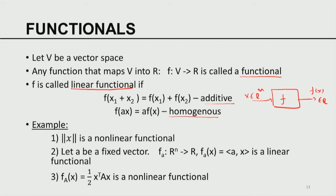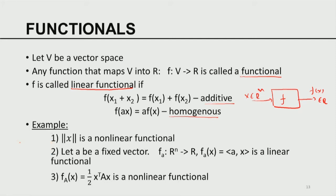Functionals are defined over a vector space, so the vector space is the basis. A functional maps a vector space V to the real line R — it takes a vector and maps it to a real number.